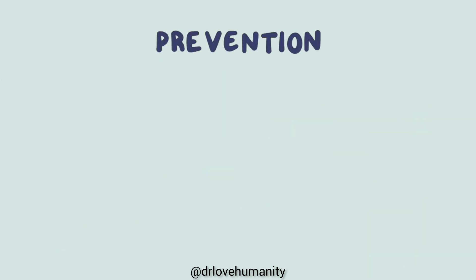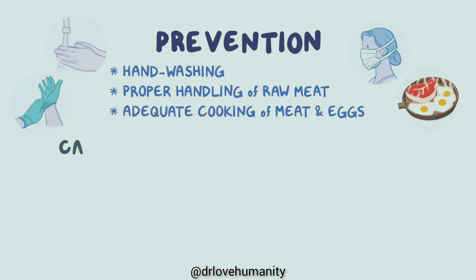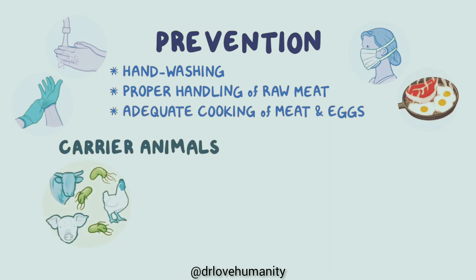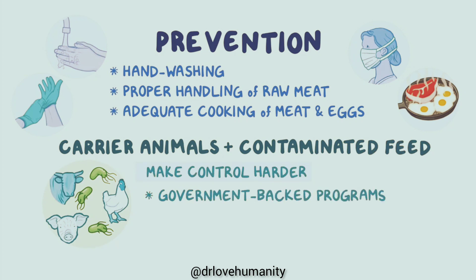Prevention is often the best course of action and includes hand washing after touching raw meat or live animals, proper handling of raw meat to avoid cross-contamination while preparing foods, and adequate cooking of meat and eggs before eating. Carrier animals, which are asymptomatic adults that shed the bacteria, and contaminated feed are factors that make control harder in livestock. In many countries, government-backed programs have been introduced to reduce infection levels among food animals, especially poultry and pigs. Vaccines are available for some animal species and may reduce symptoms along with lowering herd infection rates.